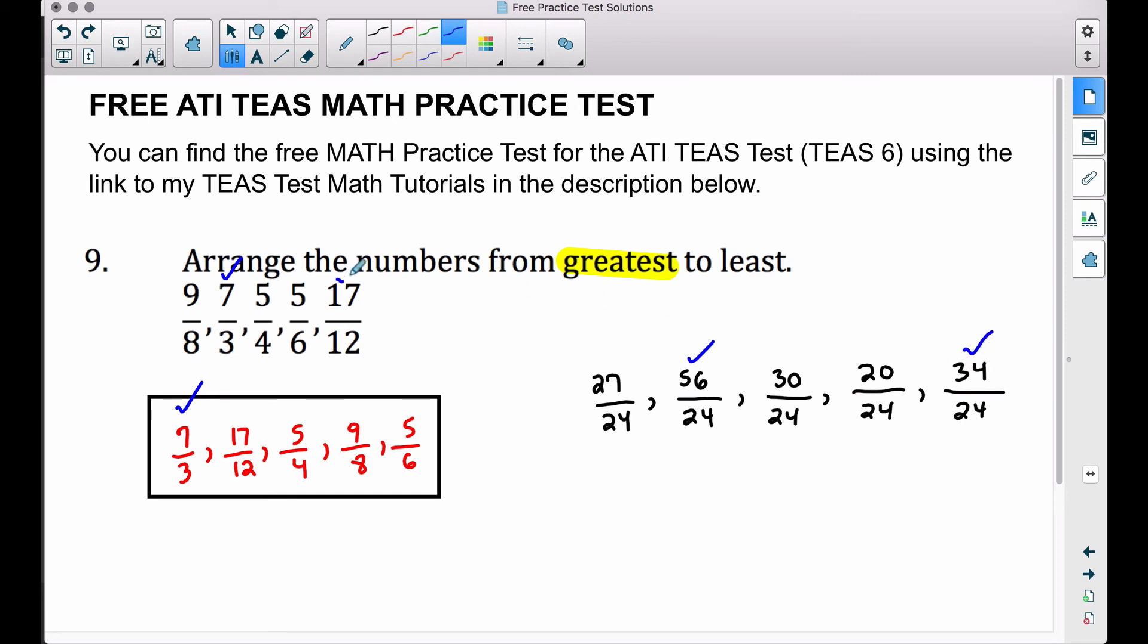Followed by the next biggest one is 30/24, which is our 5/4, then we have the 27/24, which is this first fraction of 9/8. As you can see, that matches nicely. And then last but not least, this is the smallest numerator which corresponds to that 5/6, and that is our least fraction.